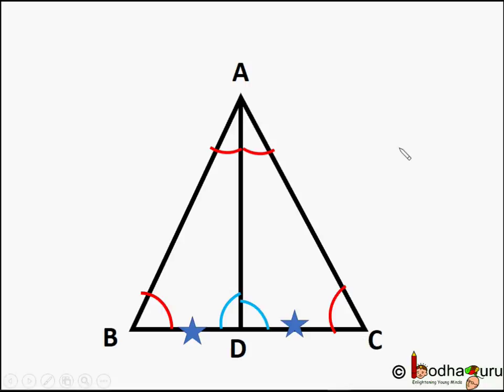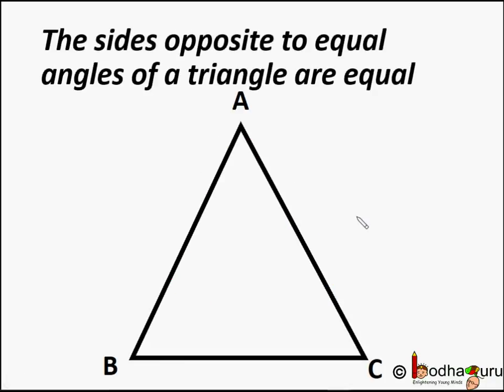As AD is perpendicular bisector of BC, triangle BAD and CAD are congruent triangles following SAS rule. So AB is equal to AC. The sides opposite to equal angles of a triangle are equal.